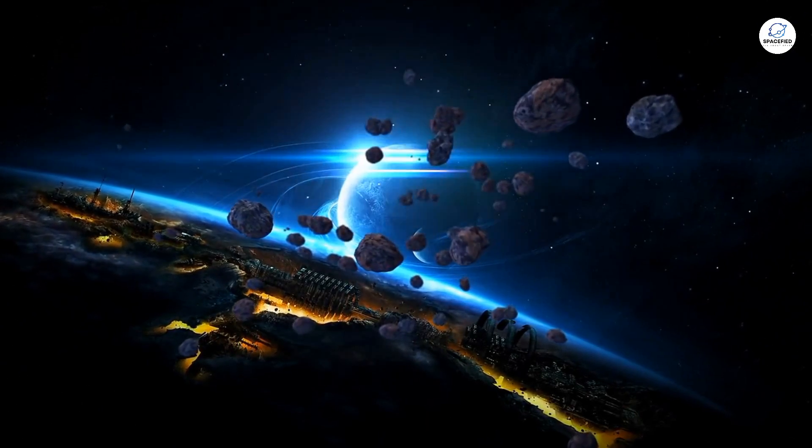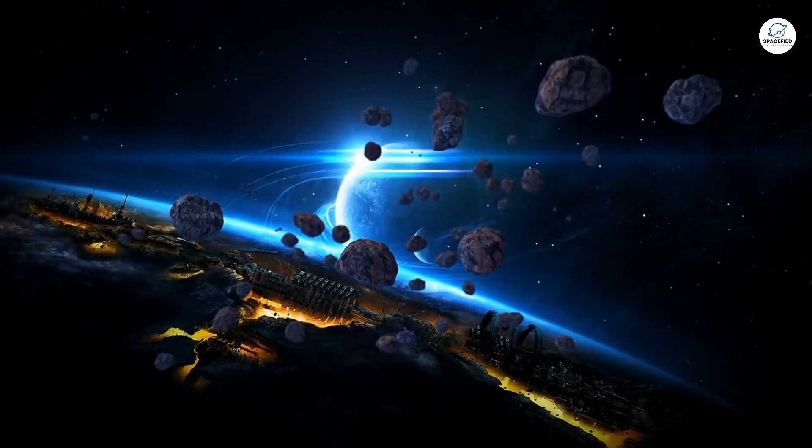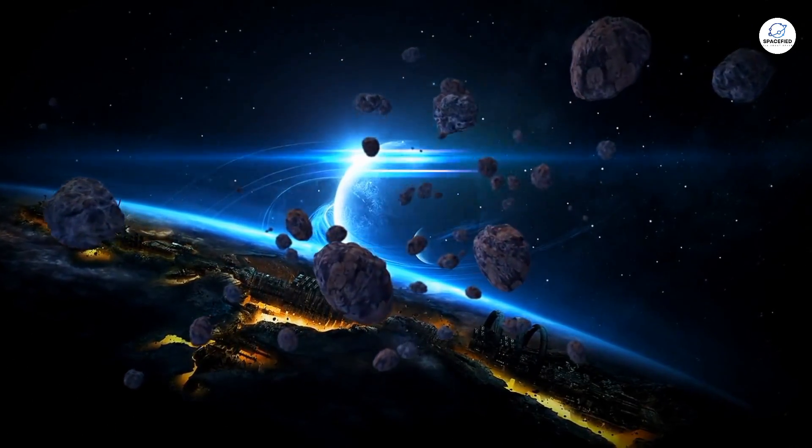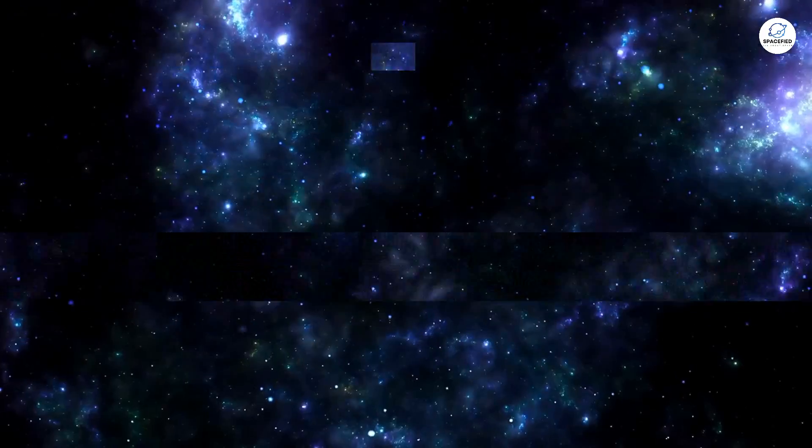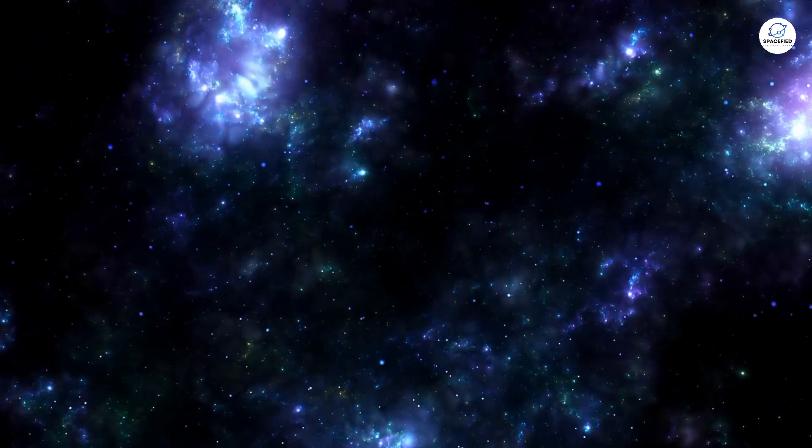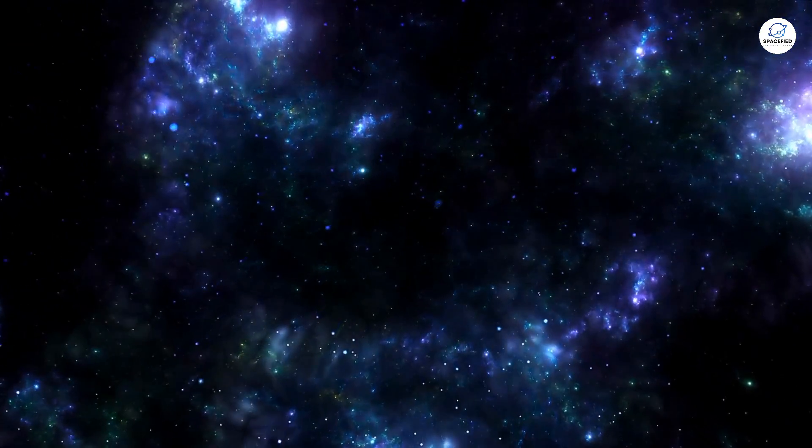For instance, regions with weaker gravity might allow the formation of entirely different types of structures, while areas with different constants of electromagnetism could have unique forms of chemistry and biology.